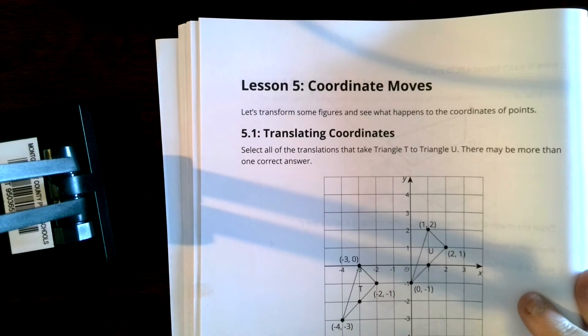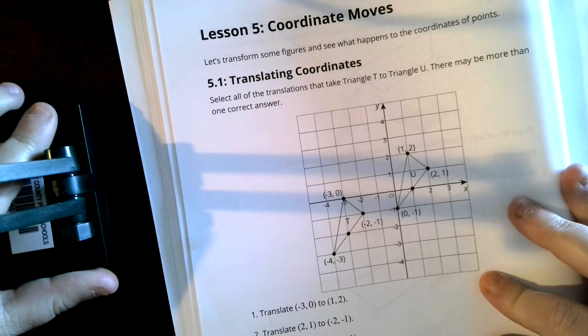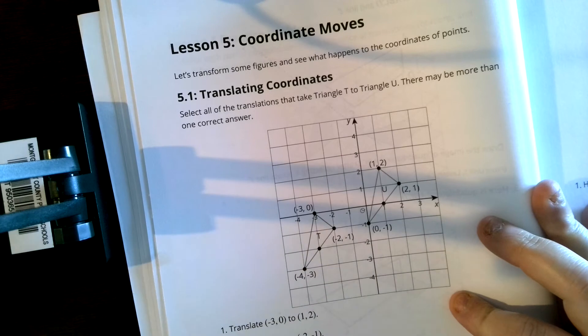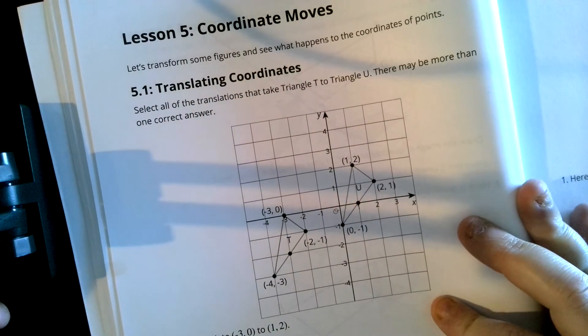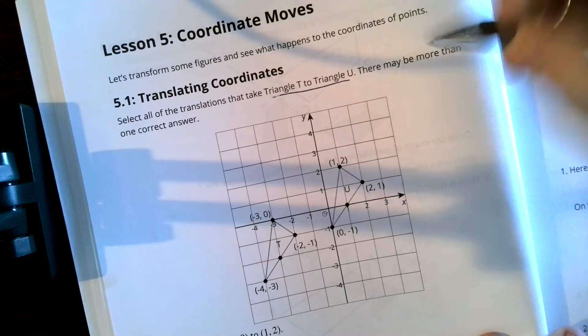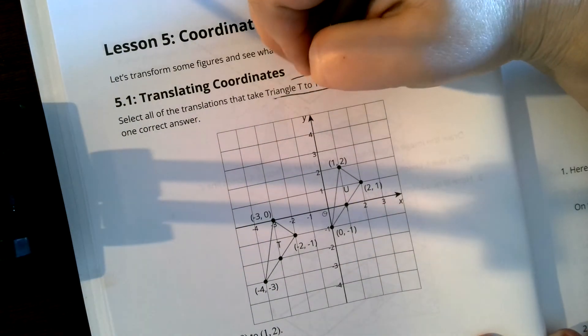Okay guys, we are working on lesson five today. We're going to start off with our warm-up, which was 5.1. It is on page 28 in your book. It says select all of the translations that take triangle T to triangle U. So we're going from T to U.